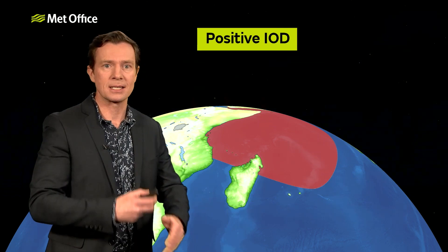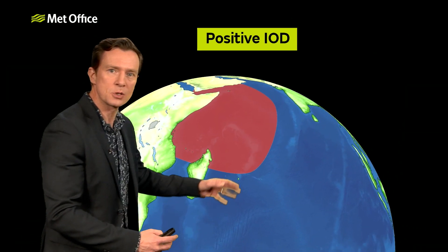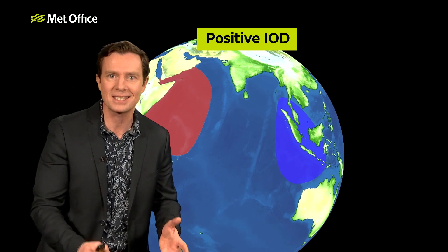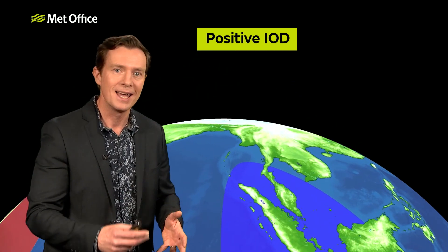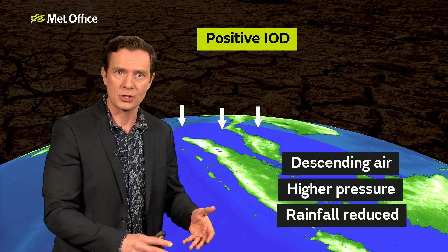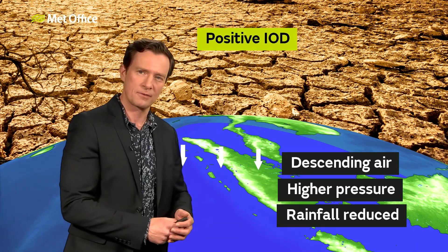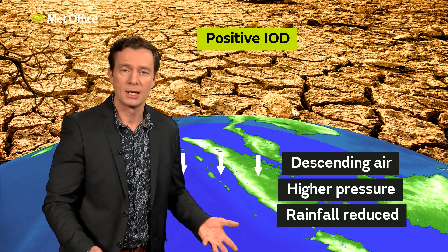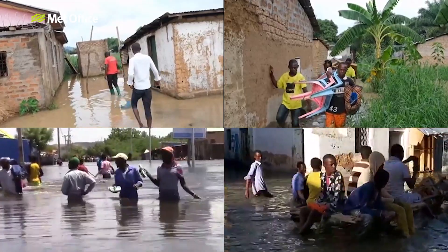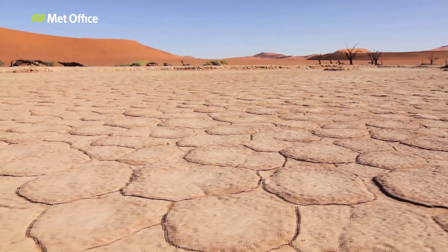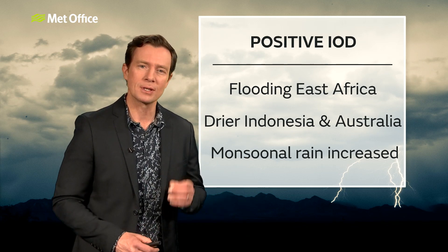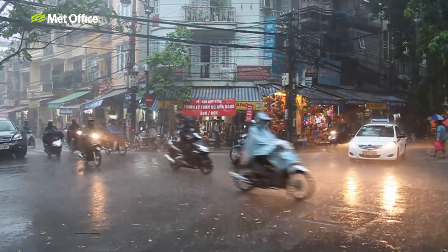It's not just the western side that's impacted — the whole ocean is. As well as warming of the waters on the western side, an upwelling of cooler waters on the eastern side of the ocean is created at the same time. The cooler waters here mean that the air doesn't rise as much, pressure is higher at the surface, rainfall is reduced, and droughts can occur. So when the IOD is positive, it usually creates flooding in eastern Africa and drought in Indonesia and Australia. A positive IOD also leads to an increase in rainfall during the southwest monsoon season across the Indian subcontinent.